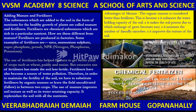Fertilizers play a dominant role in the field of agricultural science. The substances added to the soil in the form of nutrients for the healthy growth of plants are called manures and fertilizers. Fertilizers are chemical substances rich in particular nutrients, and they are produced in factories. Some examples of fertilizers are urea, ammonium sulfate, superphosphate, potash, and NPK. NPK stands for nitrogen, phosphorus, and potassium. The use of fertilizers has helped farmers get better yields of crops such as wheat, paddy, and maize.